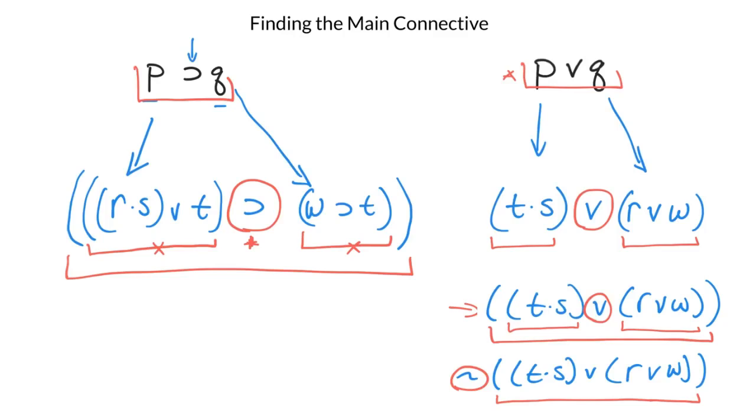When I get to this last stage though, by adding the negation out front, I've now made that a negation and not an OR statement. And if I actually added another negation in front, then this outside negation would actually be the main connective.